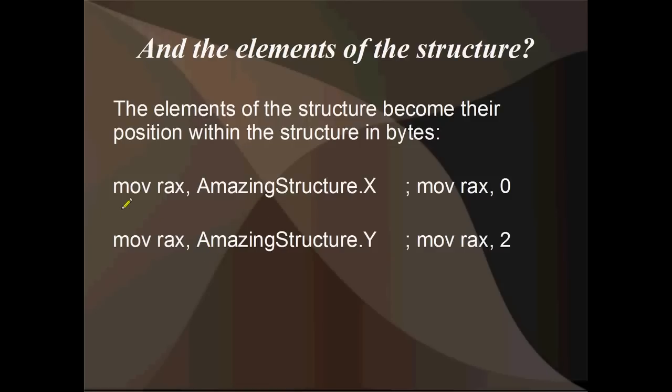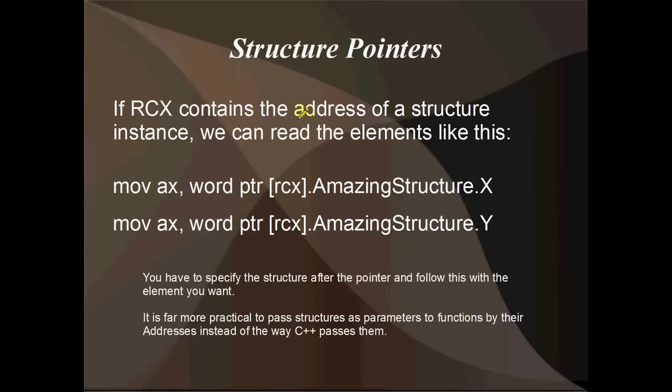So therefore, something like mov AmazingStructure.X and then AmazingStructure.Y as the second parameter doesn't make any sense at all, since that would be saying mov 0, 2, and we can't change the value of a constant. This is using the AmazingStructure's name just here. This is not an instance. Don't get confused. I think maybe I jumped into this stuff too quick, but AmazingStructure here is the structure's name, not an instance. If you say mov RAX and then instance name dot X, then it's going to read whatever the value of X is for that instance.